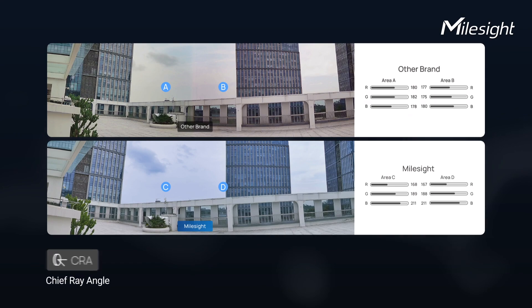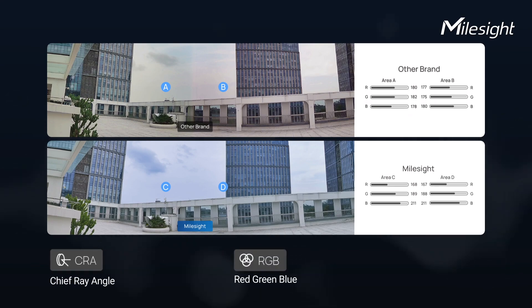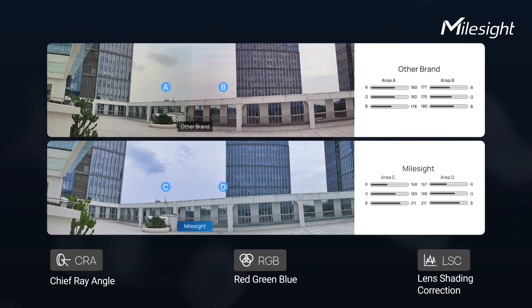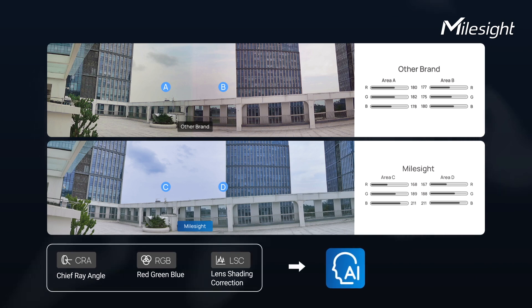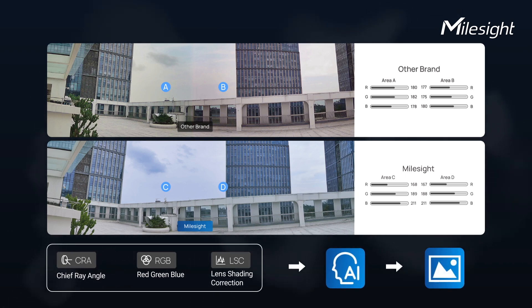By analyzing the CRA of lenses and sensors, the RGB curves under different color temperatures, and combined with lens LSC techniques, we have adjusted color values using advanced color consistency algorithms. In this way, we ensure smooth transitions and uniform representation across the entire panoramic image.